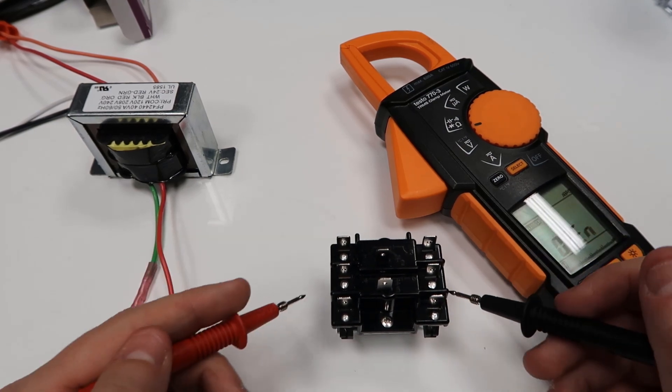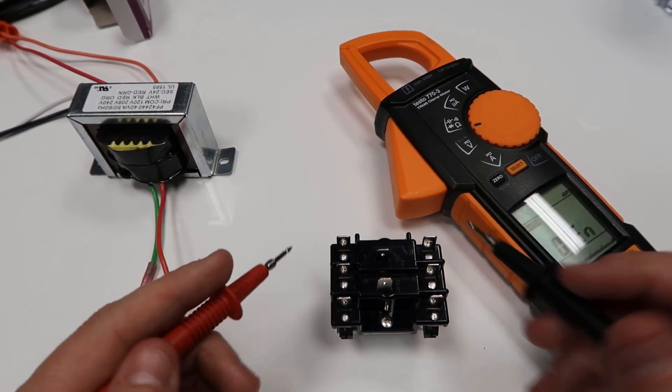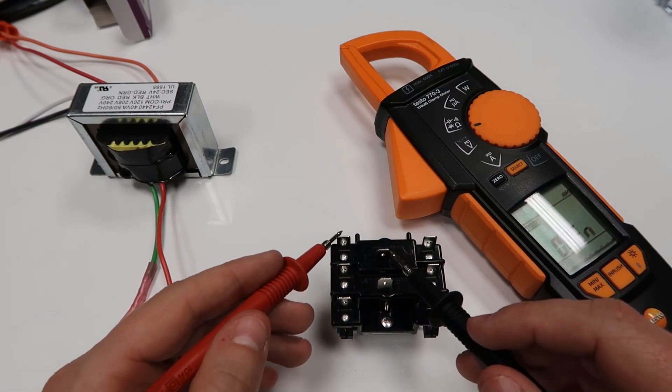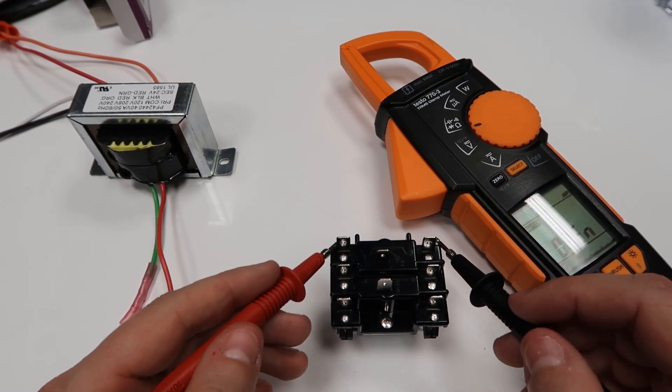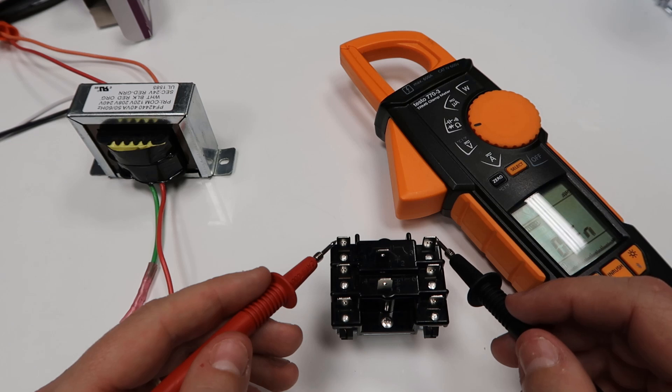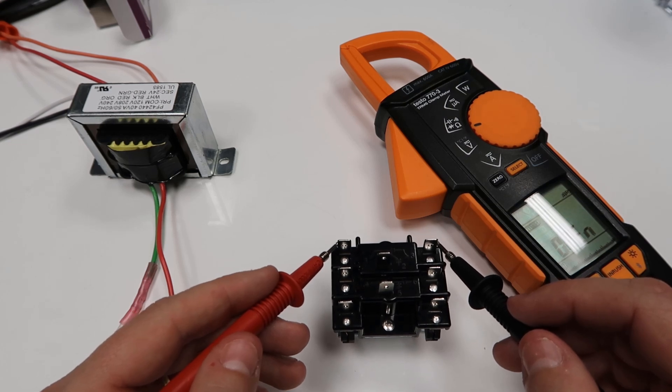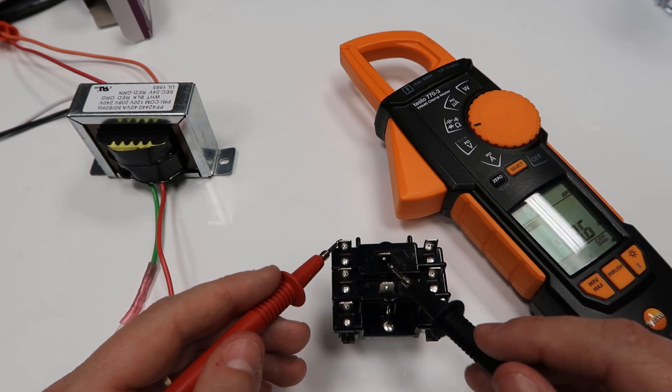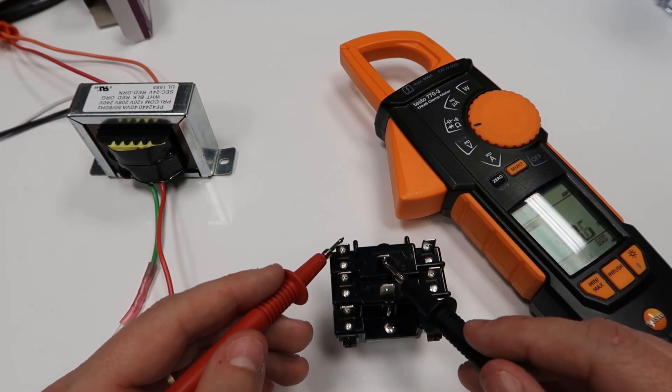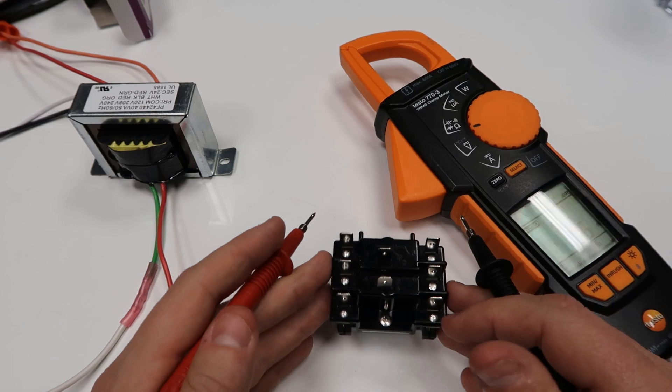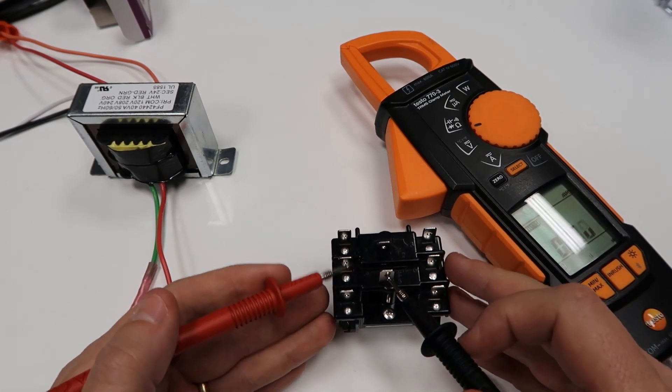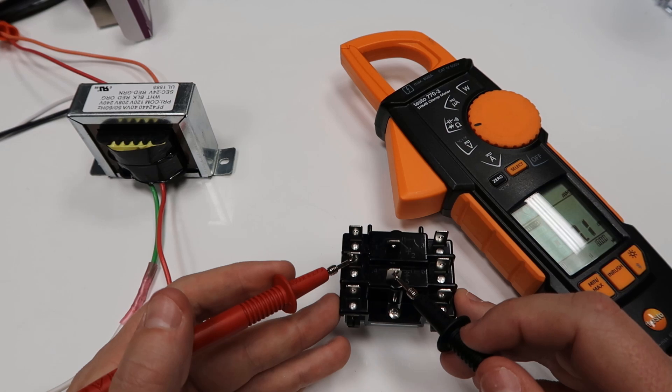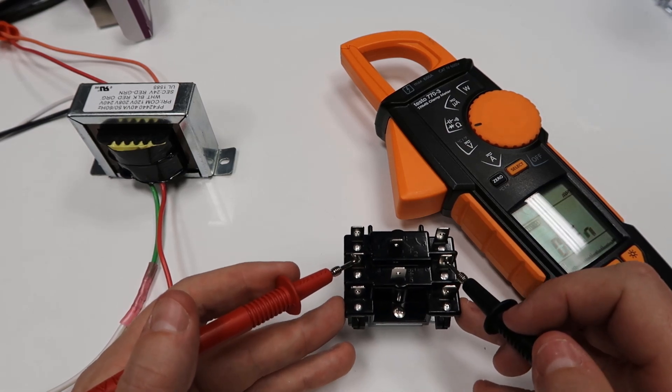Now if I were to switch the relay, meaning energize it with power here, then it would switch and there would be no path between here and here, and now there would be a path between here and here. You see right now between 1 and 3, we have no path. Between 1 and 2, there's a path because the relay is closed. Right now there's a path between these two, and there's no path between these two.